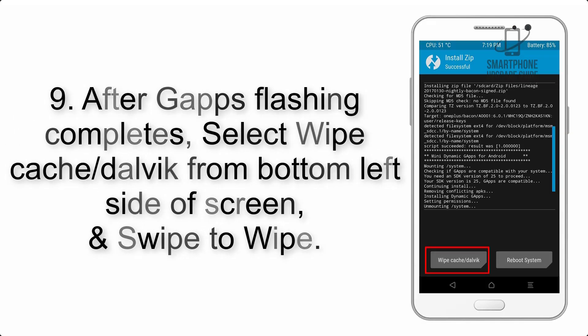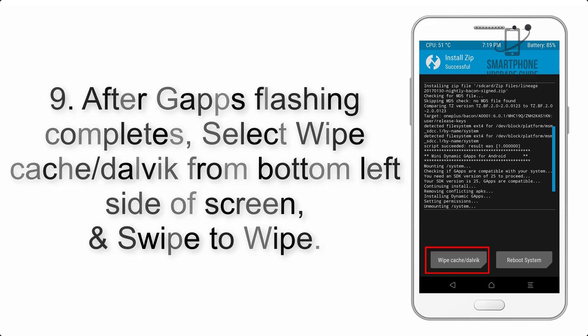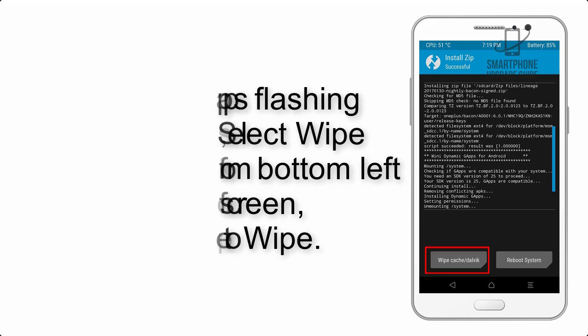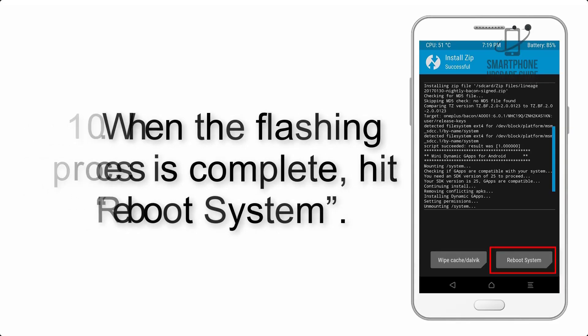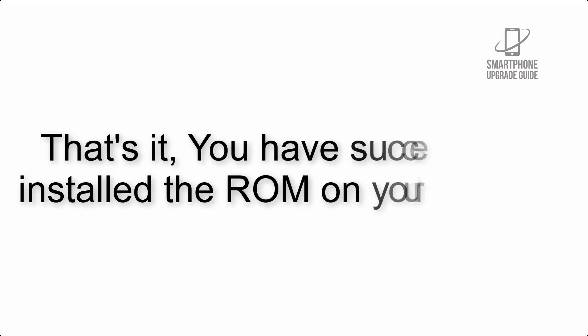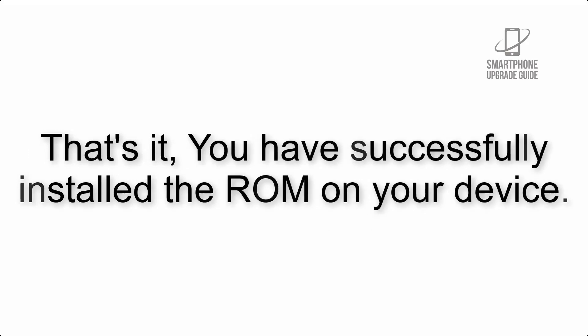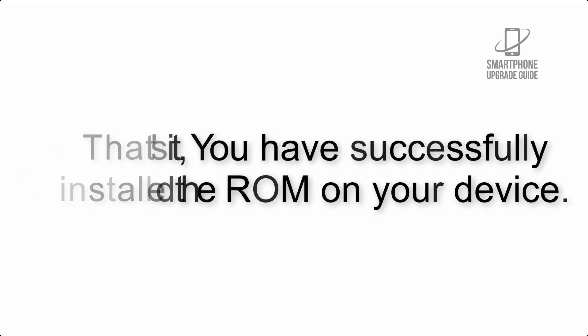Step 9: after GApps flashing completes, select Wipe Cache and Dalvik from the bottom left side of the screen and swipe to wipe. Step 10: when the flashing process is complete, hit Reboot System. That's it — you have successfully installed the ROM on your device.